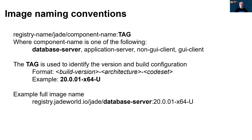Let's look at some naming conventions. Images are named as follows: we start with the registry name, forward slash jade — jade is the namespace or project name — followed by forward slash component name and colon a tag. The component name is one of the service names: database server, application server, non-GUI client, or GUI client. The tag identifies the version and build configuration, with the format: build version hyphen architecture hyphen code set. For example, a version tag would be something like the version number hyphen x64 for 64-bit, hyphen U for Unicode, or A for ANSI. A full image name example is: registry.jadeworld.io/jade/database-server colon the tag.